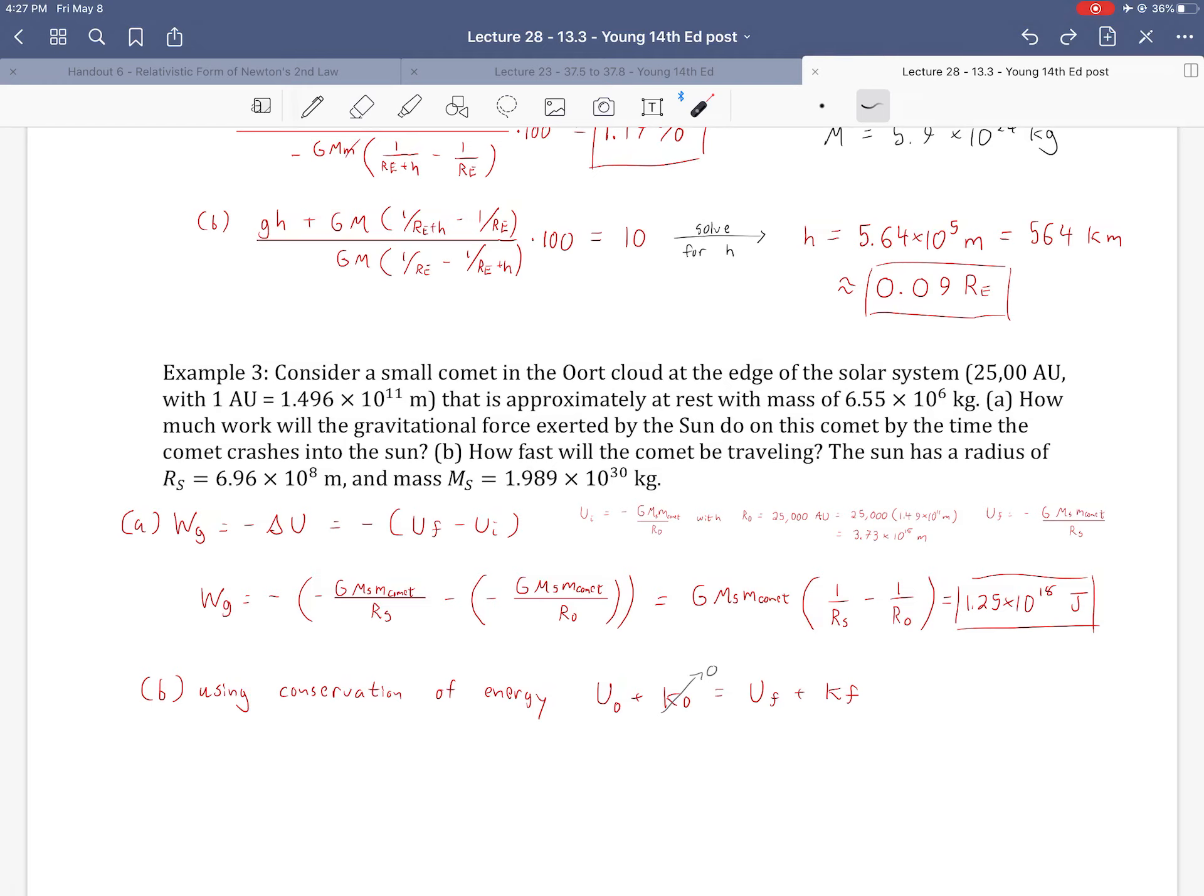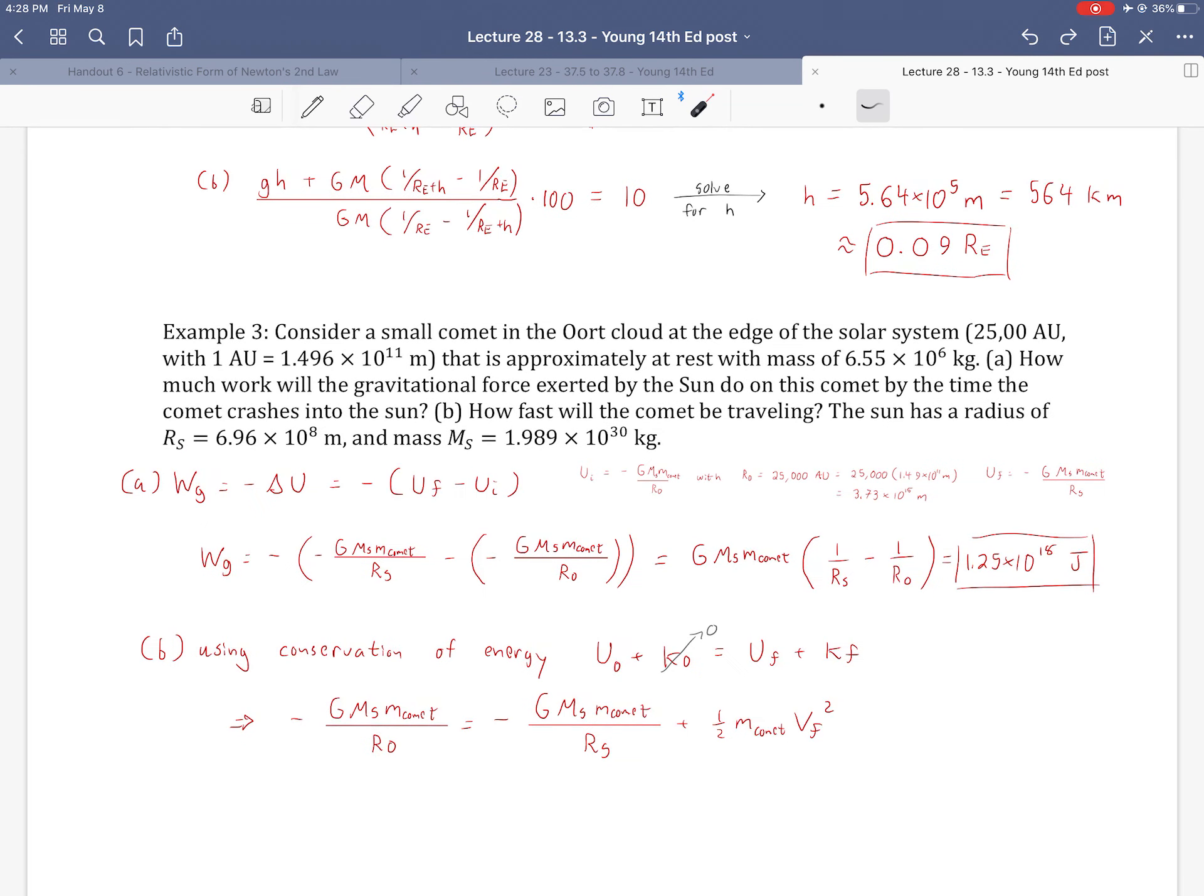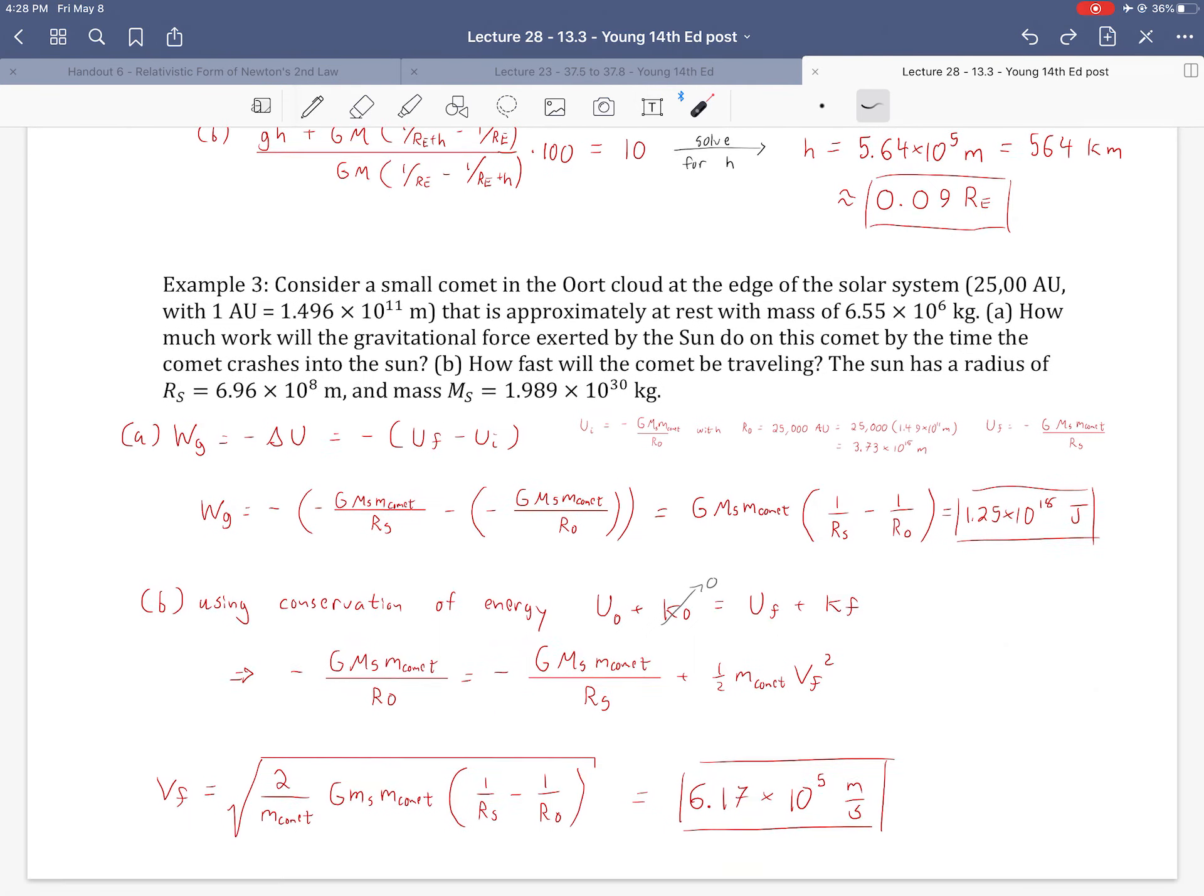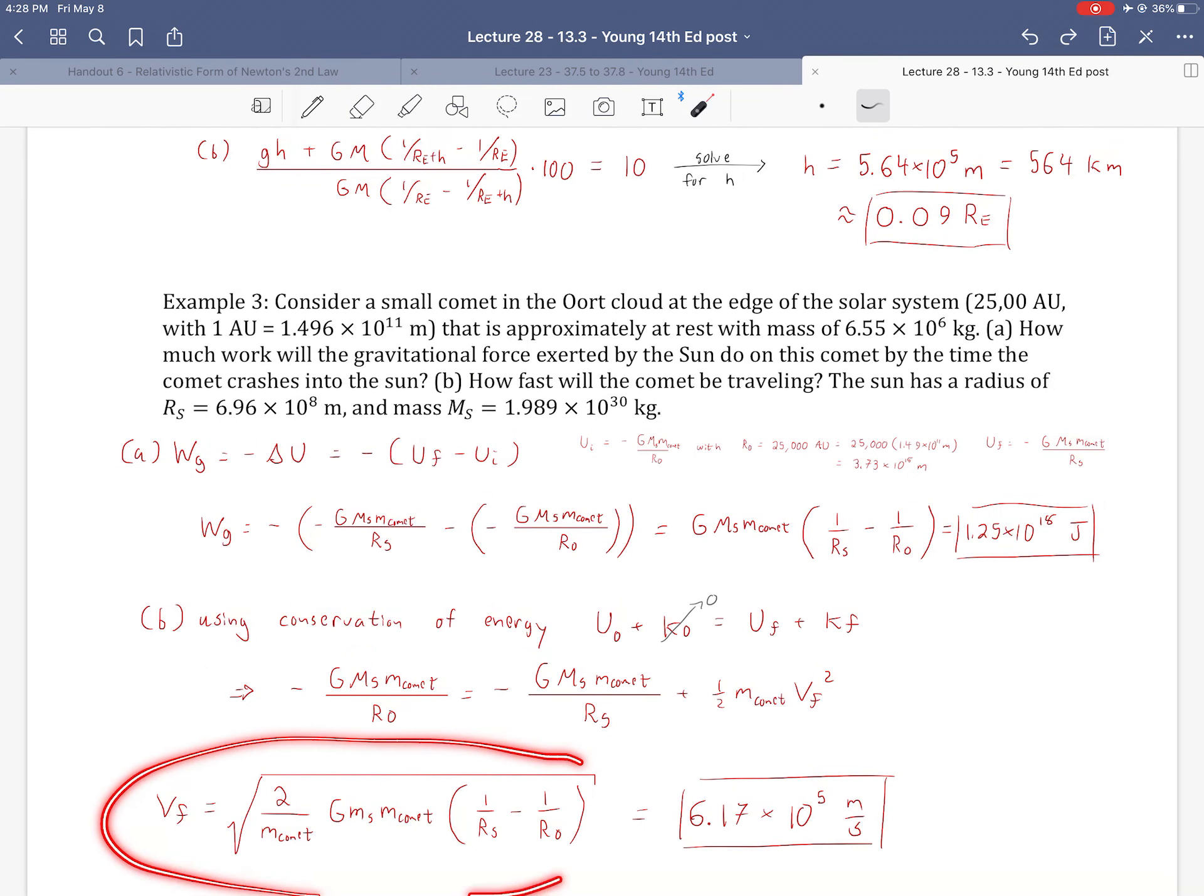So then using conservation of energy, assuming an initial kinetic energy of 0, we should then definitely be able to find K final. So I set this up again. And honestly, I'm not even sure why I didn't just use the work kinetic energy theorem, why I didn't just use W equals delta K. Instead I recalculated U initial and U final. I think I do it just because then I can set up a general expression.